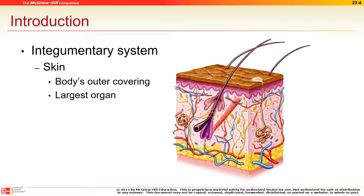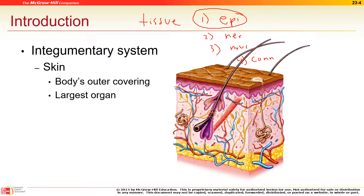The integumentary system — what type of tissue is this? We have four types of tissue: epithelial, nerve, muscle, and connective tissue. Skin is epithelial tissue. It makes a border with our body, and that includes the skin, GI tract, and all of our glands.